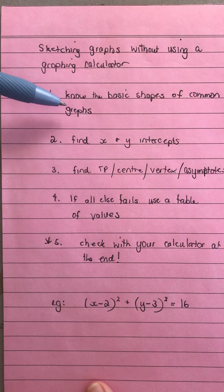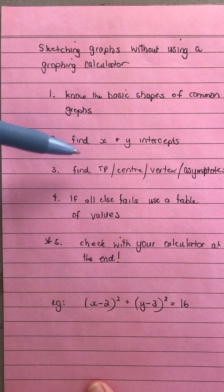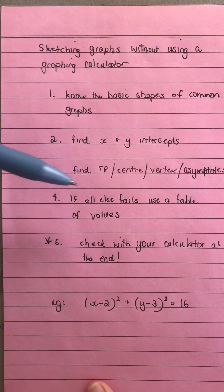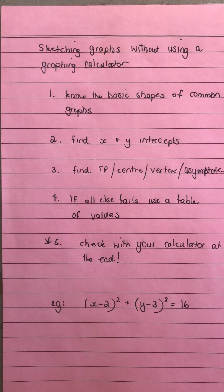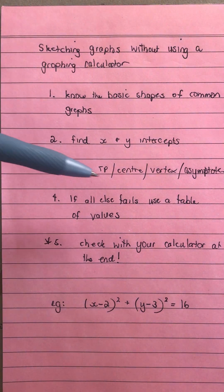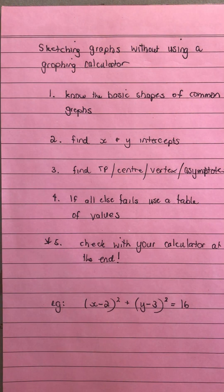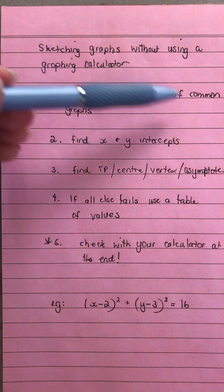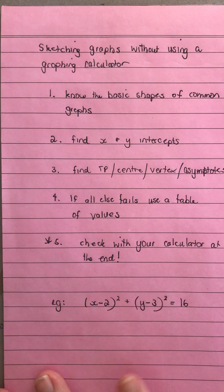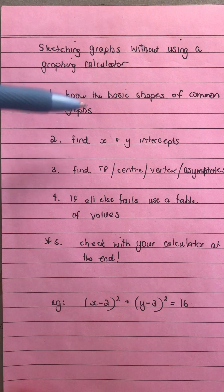So we're looking if you know the basic shapes of your common graphs, if you can find x and y intercepts, and then knowing what type of graph it is, whether you're looking for a turning point, center, vertex, or asymptotes. That is linked to knowing the basic shapes and the basic features of those common graphs.